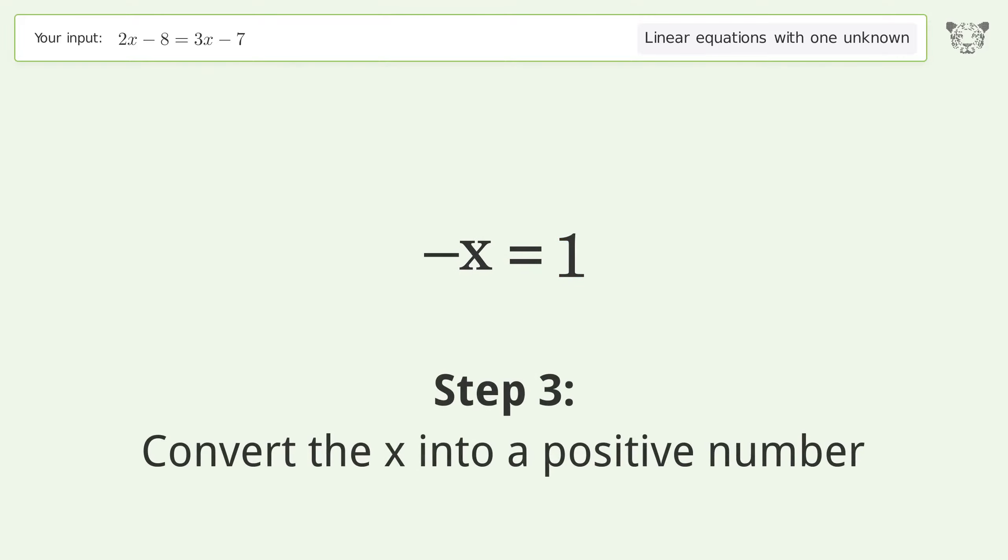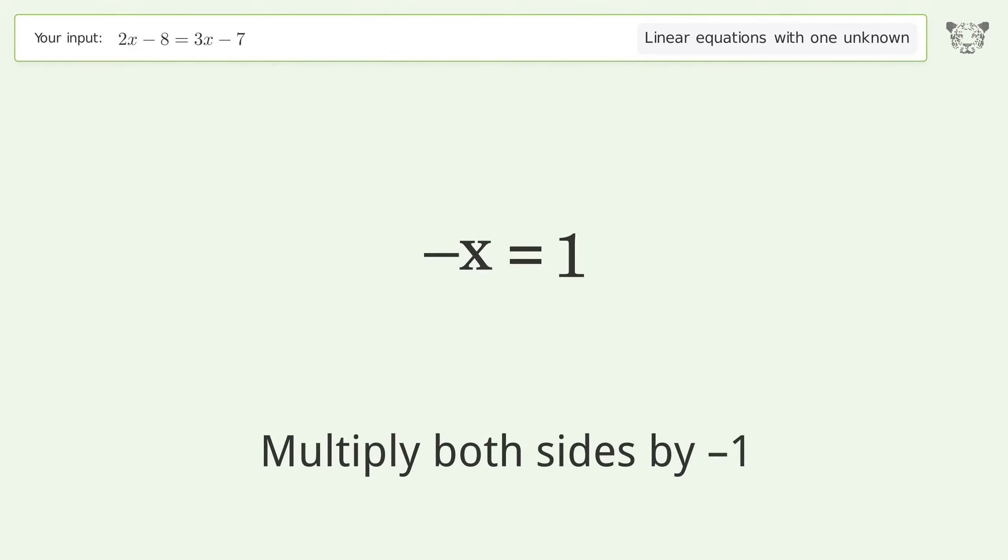Convert the x into a positive number. Multiply both sides by -1.